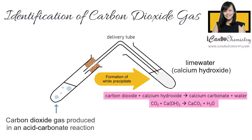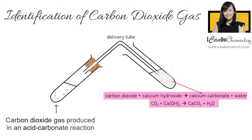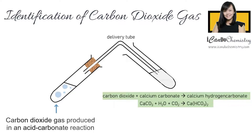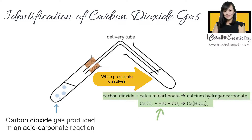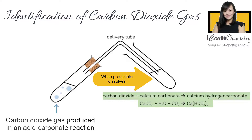The white precipitate that you see is actually calcium carbonate, which is an insoluble carbonate. If you allow more gas to pass through, you will realize the white precipitate actually dissolves. When calcium carbonate further reacts with carbon dioxide gas, calcium bicarbonate — also called calcium hydrogen carbonate — is formed. The products from the first reaction, CaCO₃ and H₂O, will react with carbon dioxide to form calcium hydrogen carbonate. This compound is actually soluble in water and forms a colorless solution. Hence, you will notice the white precipitate disappearing if you allow more carbon dioxide gas to bubble through.